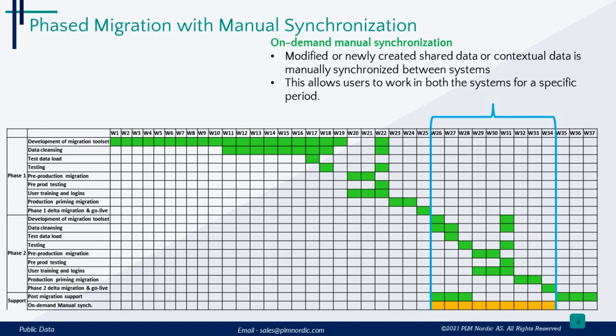Occasionally, we have to manually update data that has been changed or newly created. This is done to make sure that shared or contextual information is up-to-date in both systems, allowing users to work in both systems with all the required carryover data efficiently. This arrangement is temporary and comes into effect after phase 1, ending with the migration of last-phase data.